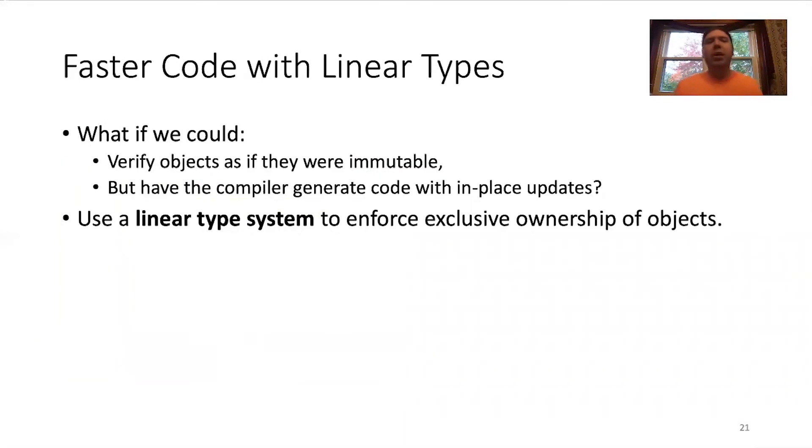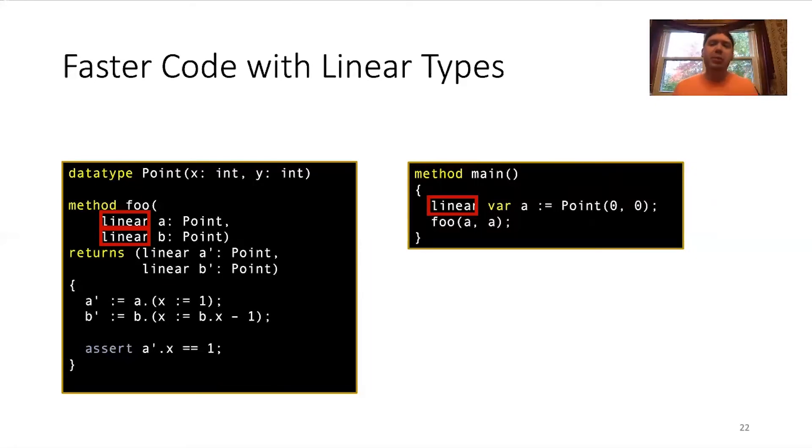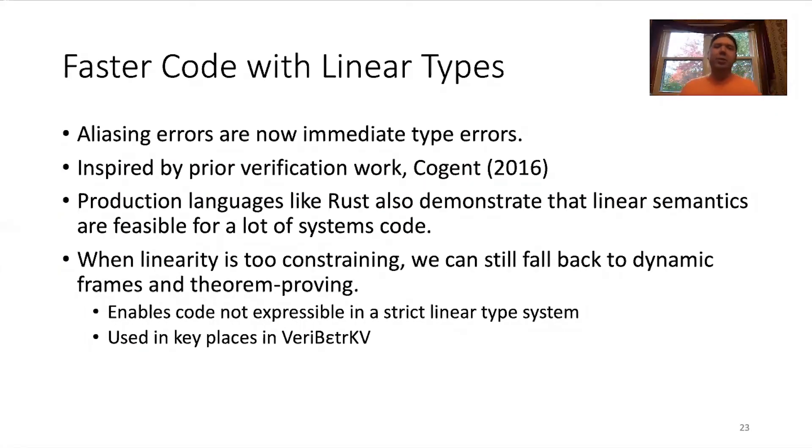So, what if we could verify objects as if they were immutable, but have the compiler generate code with in-place updates? And it turns out we can do this with a linear type system to enforce exclusive ownership. So, for example, here's that same code from the last slide, but now we've added the linear keyword. So, again, we're treating objects as immutable, or the verifier is, so it can prove this assertion very easily. However, it would still reject a line like this because in a linear type system, a variable can only be used once. And so, using a twice like this would be illegal. So, the linear type system is enforcing exclusive ownership. And whenever you have a linear variable, it is the only variable pointing to a given object. So, when an operation is performed, like creating a new object, the compiler can optimize that into a simple update in place. This is great because aliasing errors now become immediate type errors in the linear type system.